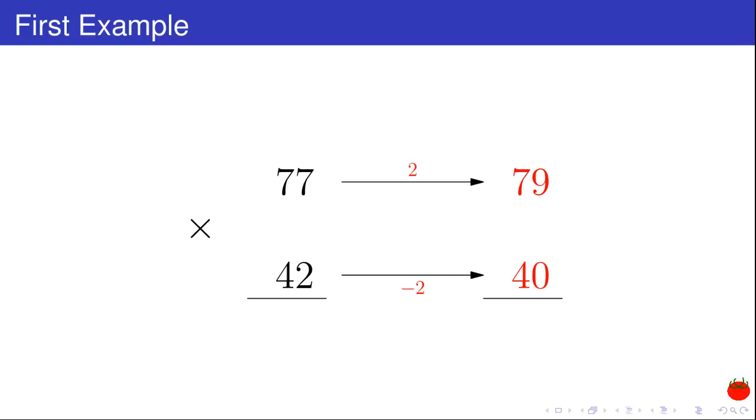To offset this operation, I add 2 to 77 and I obtain 79. And I try to remember the number that was not rounded, here 77.